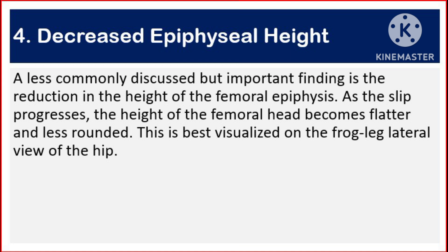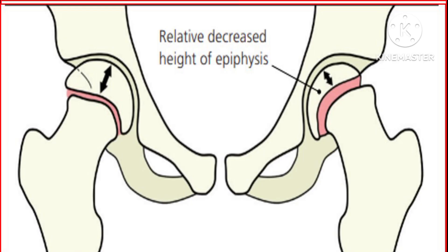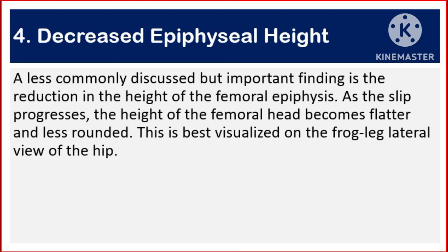Number four: decreased epiphyseal height. A less commonly discussed but important finding is the reduction in the height of the femoral epiphysis. As the slip progresses, the height of the femoral head becomes flatter and less rounded. This is best visualized on the frog-leg lateral view of the hip.